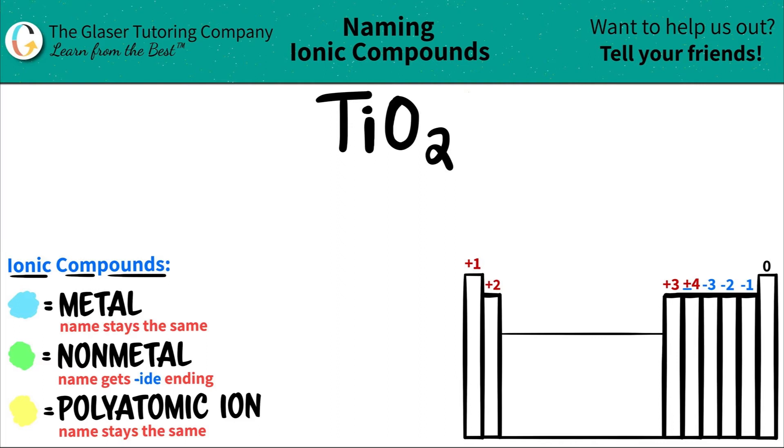Today, we are going to be naming the ionic compound TiO2. So we have two different elements here.